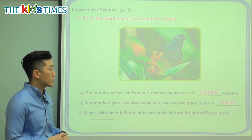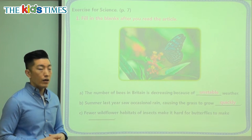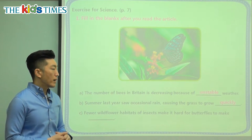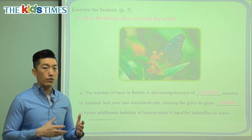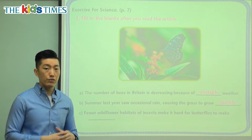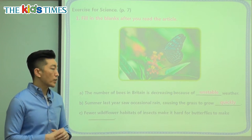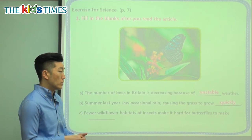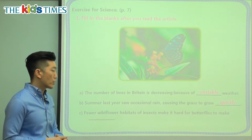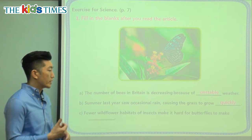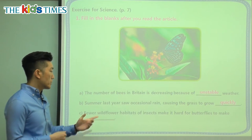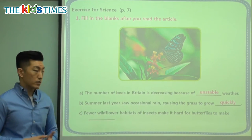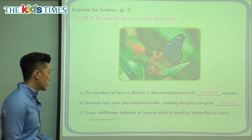So the grass gets too tall, too fast, and that also changes things. Imagine if the area that you live goes through sudden change — there's going to be a lot of things that change as a result. So because of the grass growing too quickly, we see that a lot of the insects had a hard time surviving.